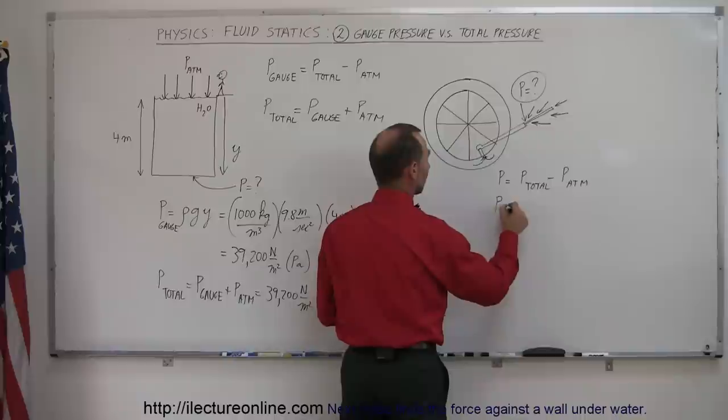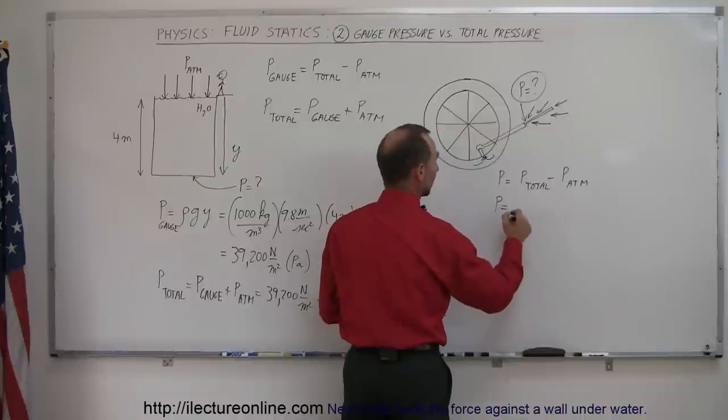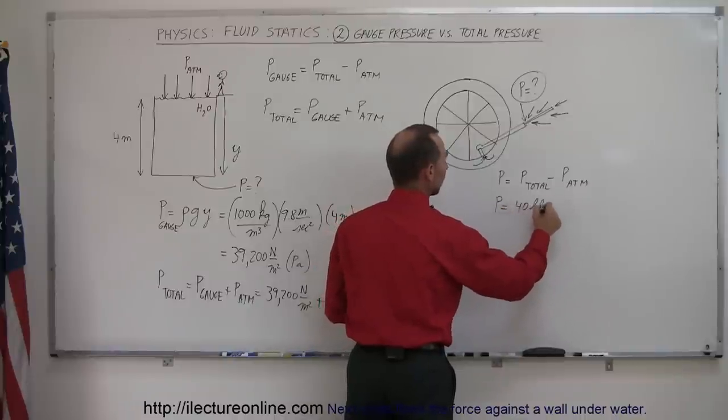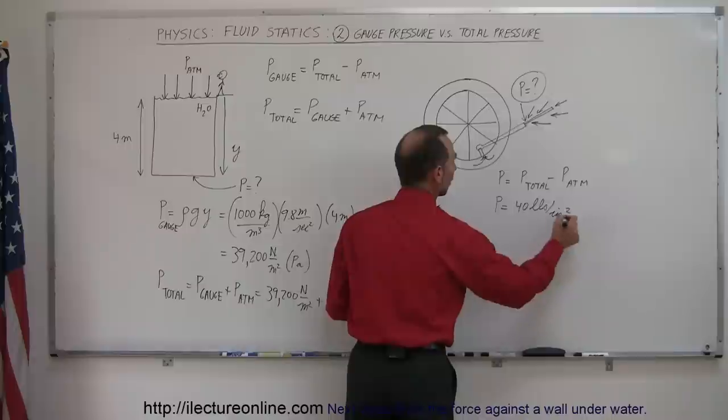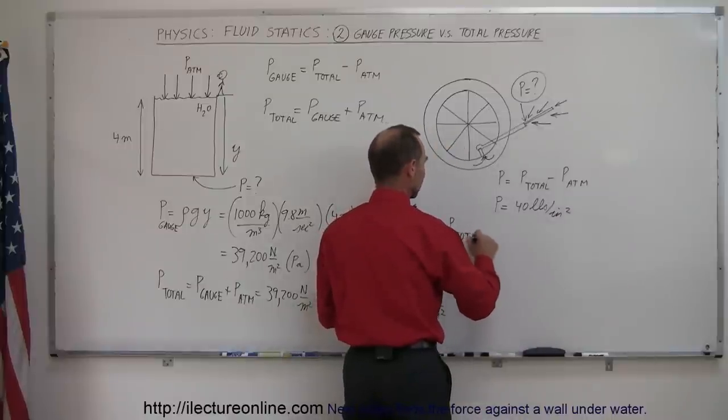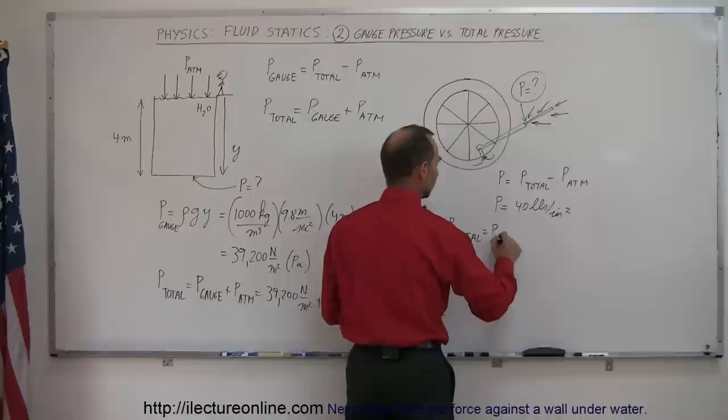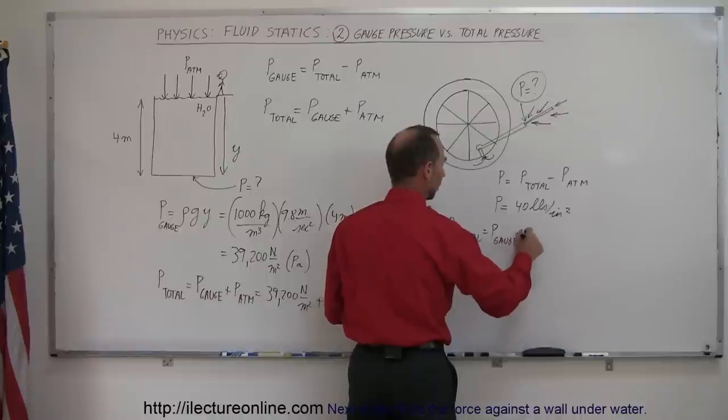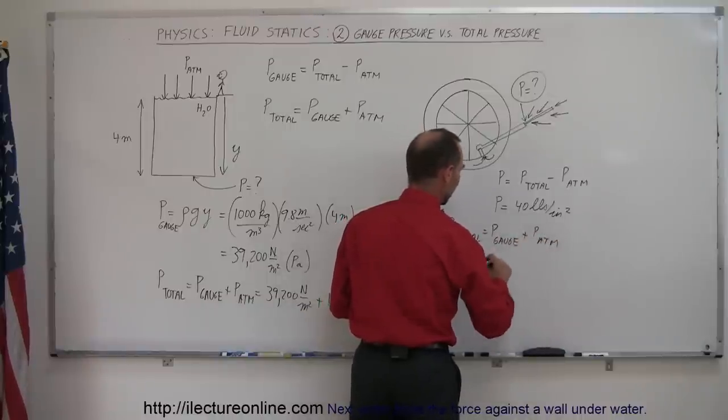So in this case, let's say that the pressure in the tire is equal to 40 pounds per square inch. What that means is that the total pressure is equal to the gauge pressure plus the atmospheric pressure.